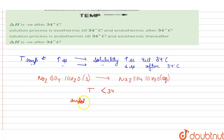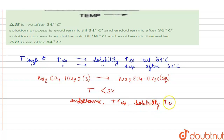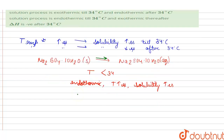The reaction is endothermic because if we increase the temperature, the solubility increases and it favors the forward direction. Now if we see that the temperature is greater than 34 degrees Celsius, the solubility decreases because the reaction becomes exothermic.